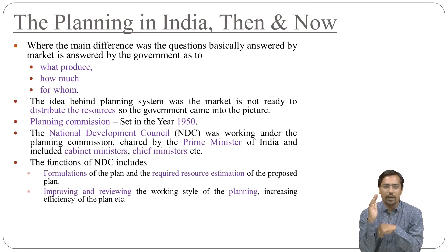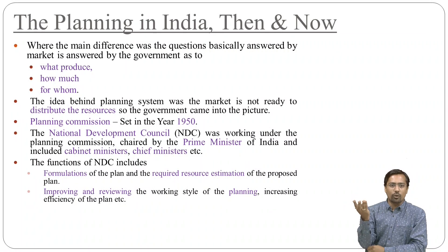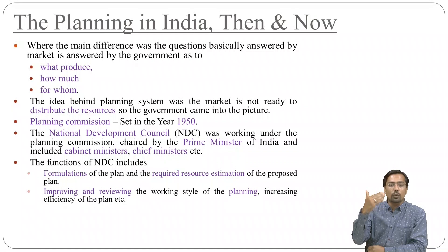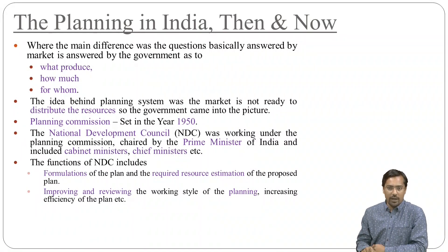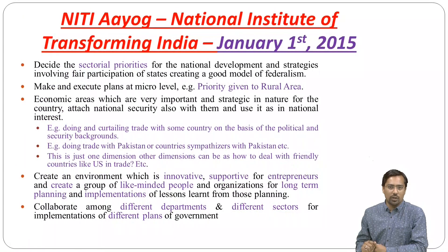Planning commission was established in 1950 to answer what to produce, how to produce, when to produce, for whom to be produced, and how to achieve growth. In 1950, both the planning commission and the National Development Council were established. The chairman of the National Development Council is the Prime Minister of India, which includes cabinet ministers as well as chief ministers.